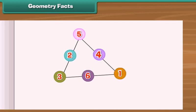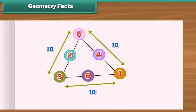Geometry facts. Look at this magic triangle. The sum of numbers on each side of the triangle is 10. Let us verify.